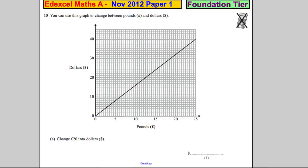Question 15. Here's a graph and you can use it to change between pounds and dollars. So part A, change 20 pounds into dollars.